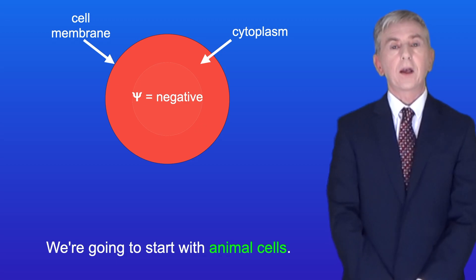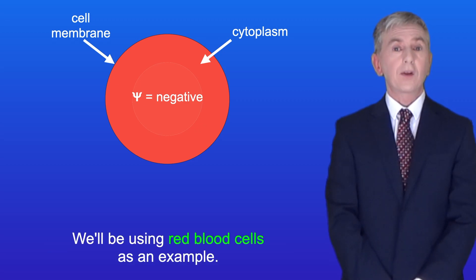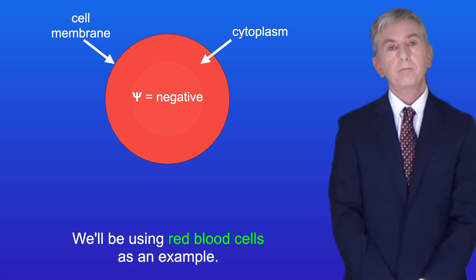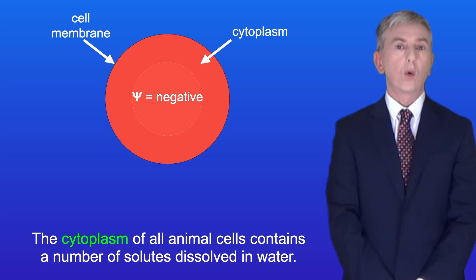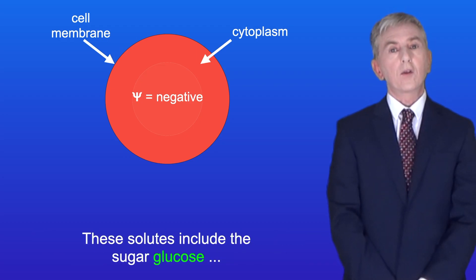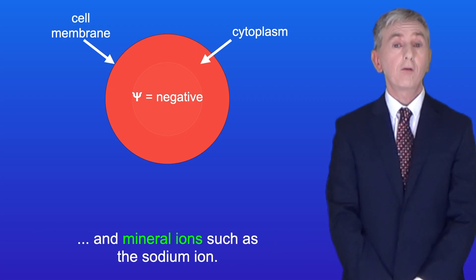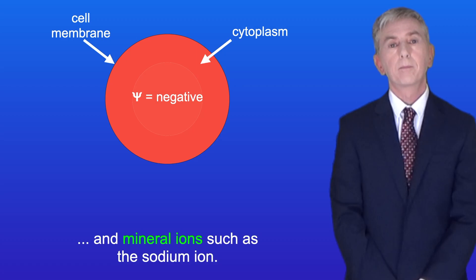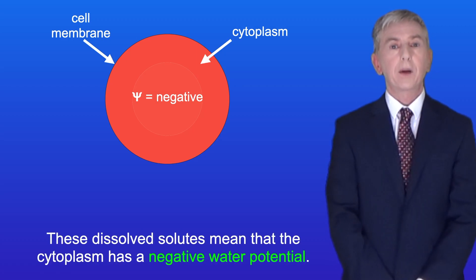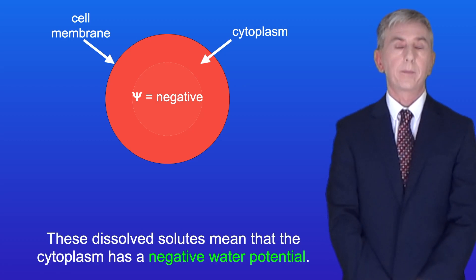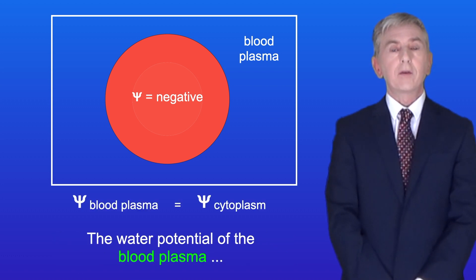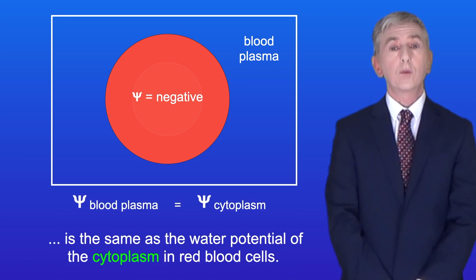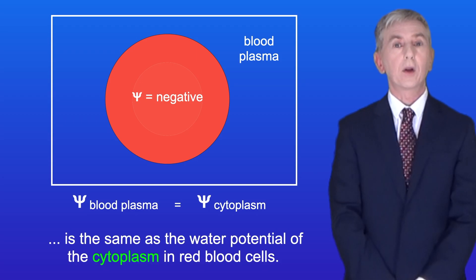We're going to start with animal cells and we'll be using red blood cells as an example. The cytoplasm of all animal cells contains a number of solutes dissolved in water. These solutes include the sugar glucose and mineral ions such as the sodium ion. These dissolved solutes mean that the cytoplasm has a negative water potential. Red blood cells are surrounded by a watery solution called blood plasma, and the water potential of the blood plasma is the same as the water potential of the cytoplasm in red blood cells.